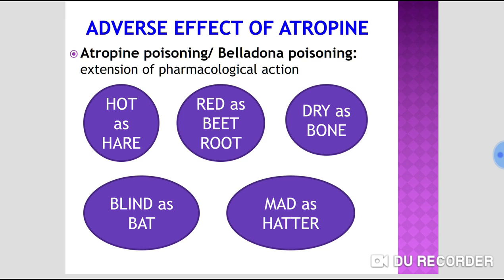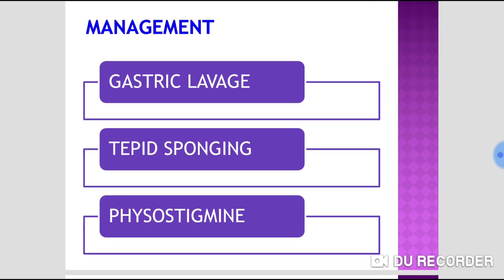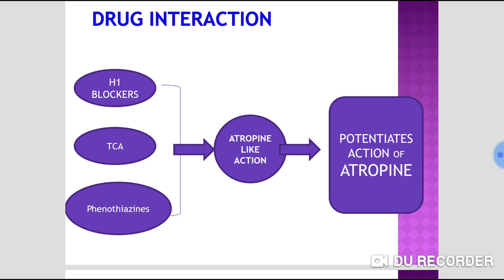Treatment of atropine/belladonna poisoning: hospitalize the patient, perform gastric lavage with potassium permanganate, use tepid sponging for hyperpyrexia, diazepam for convulsions. The drug of choice is physostigmine (a cholinergic agonist), which reverses all actions of atropine. Note: antihistamines (H1 blockers), tricyclic antidepressants, and phenothiazines have atropine-like action and may potentiate atropine's effects.